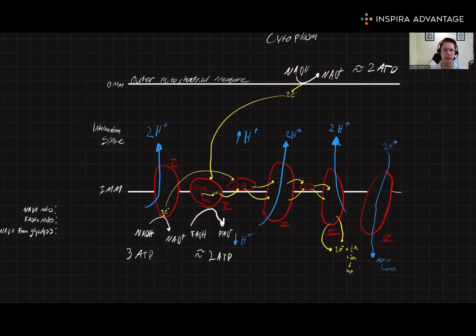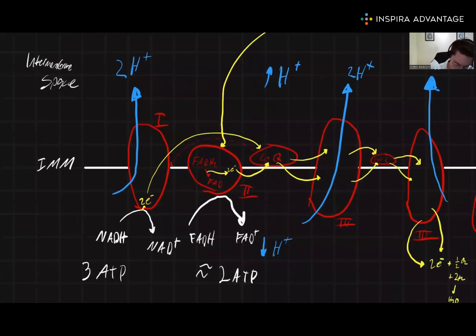Okay, so now let's trace the path these electrons take through the ETC. We want to track how many hydrogens they're pumping into the intermembrane space. Starting at complex 1, where NADH from inside the mitochondria goes, this pumps out 2 hydrogens.